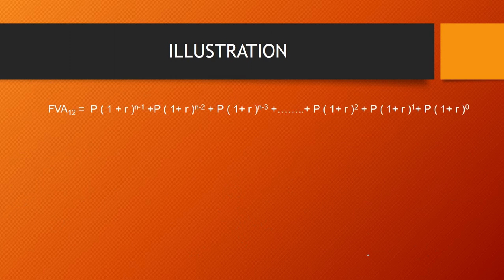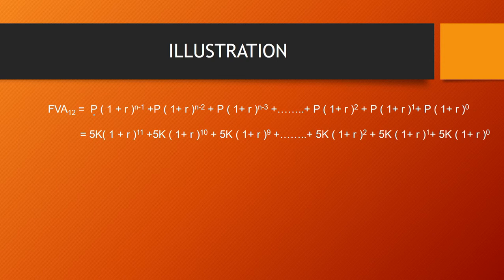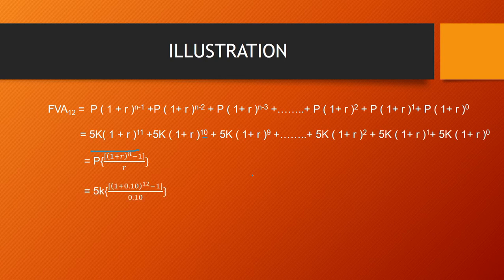First, we calculate the future value of annuity at the end of year 12. The formula is: FVA = P × [(1 + r)^n − 1] / r. Here P = 5000 and n = 12 years. For the first installment deposited, interest accrues for 11 years; for the next, 10 years, and so on. Putting values into the formula: FVA = 5000 × [(1 + 0.10)^12 − 1] / 0.10.